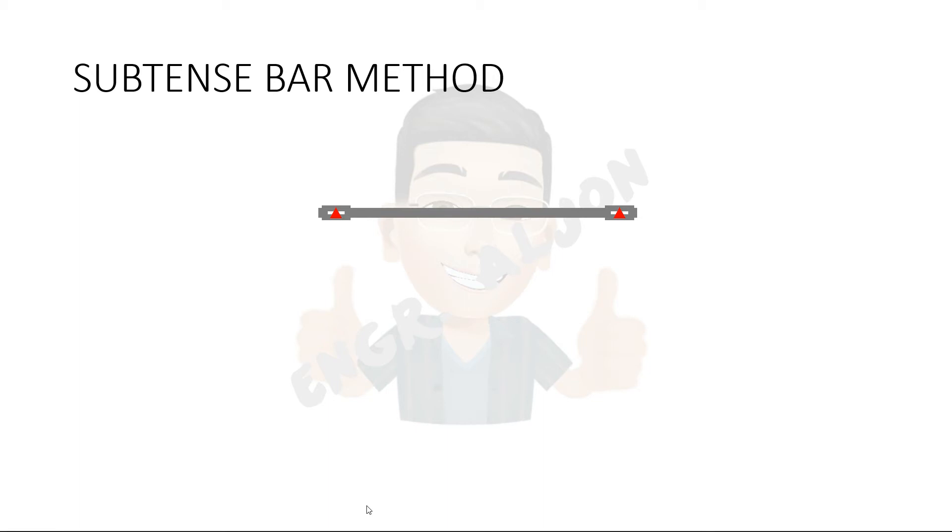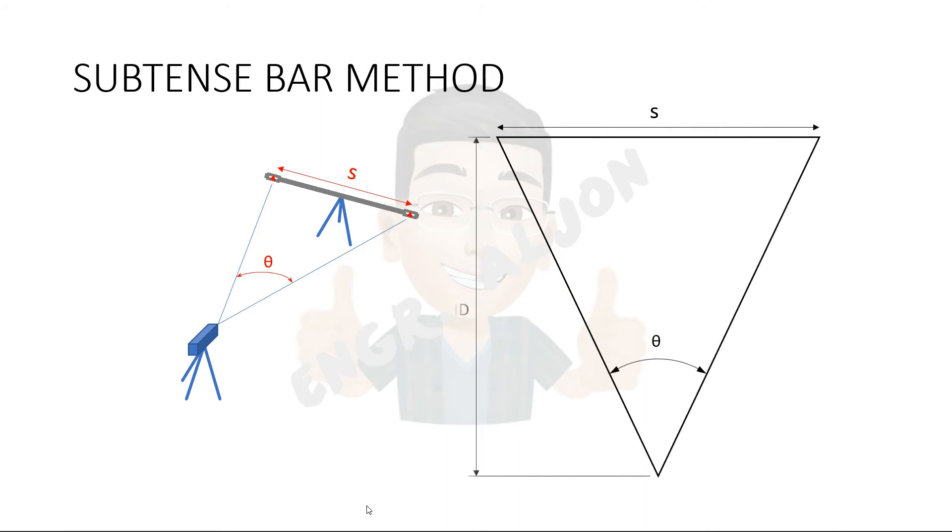Another tachyometry method is the subtense bar method. It employs a bar with known length, held horizontal, and the instrument takes the angle subtended by the ends of the bar. Blowing up this triangle, we arrive at this figure. Most references give this formula, where HD is the horizontal distance, S is the length of the bar, and theta is the angle subtended.